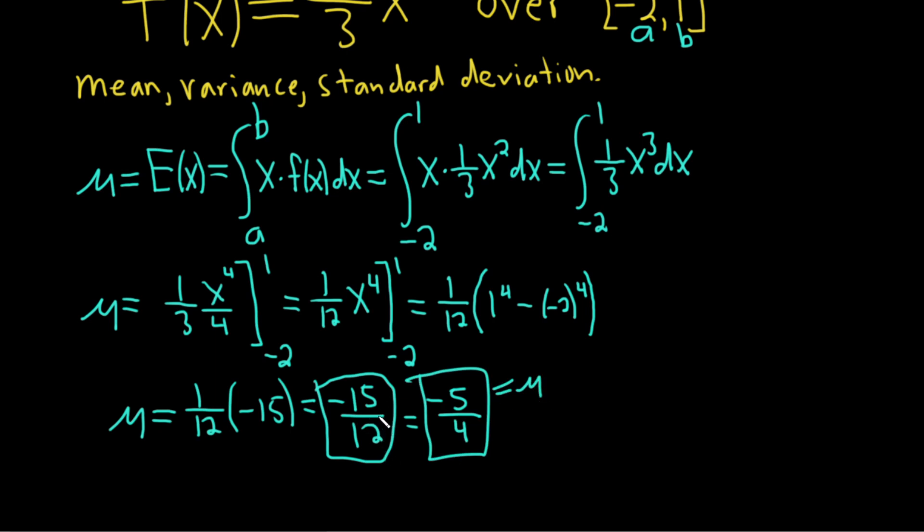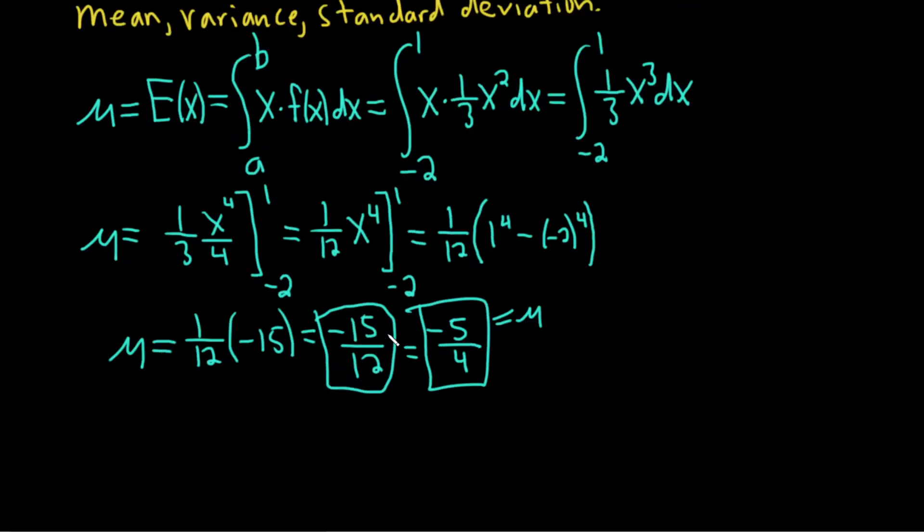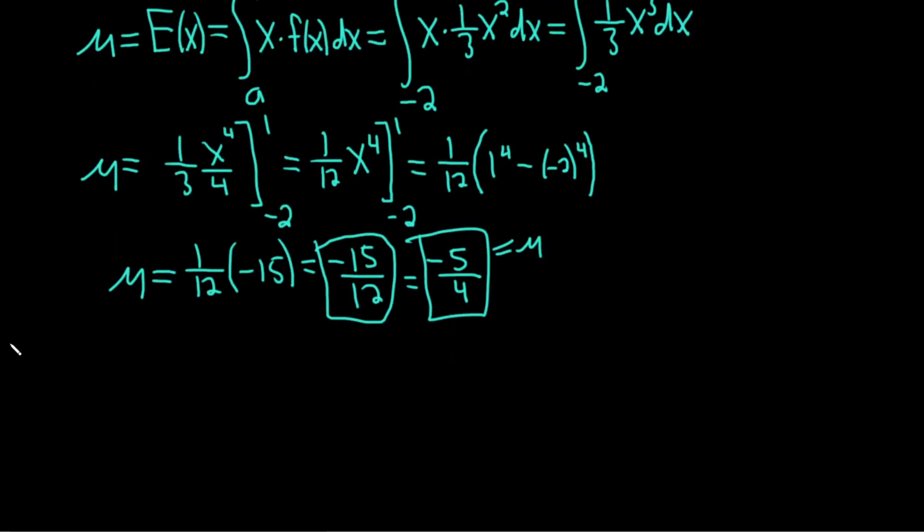Now we have to find the variance. Recall that variance is given by the formula: σ squared equals E(x²) minus (E(x))², which is μ squared. We need to work out E(x²) and use this formula.